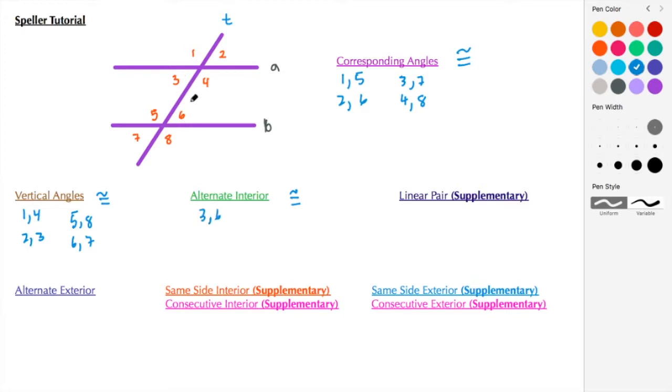Next we have alternate interior angles. Those angles are also congruent: 3 and 6, and 4 and 5.